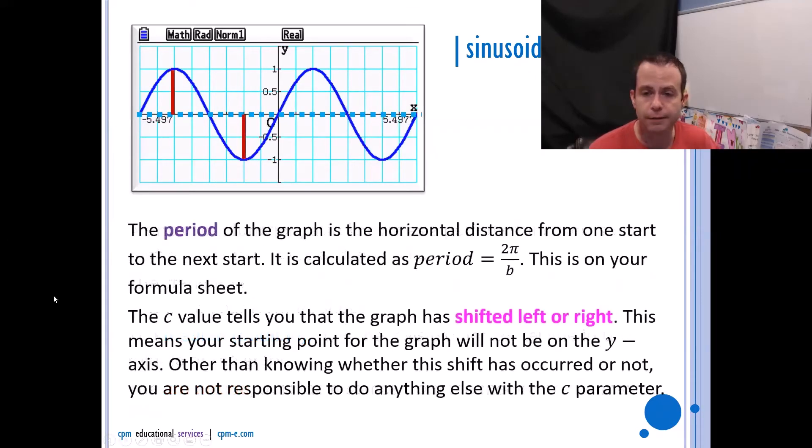The period of the graph is the horizontal distance from one start to the next. Now one start to the next, it doesn't really matter where you start as long as you go to the same spot. So in the first example I showed you here, I started on a midline and then I went up all the way down and then all the way back to that starting on the midline going up portion. Okay, so that horizontal distance that I cover is called a period.